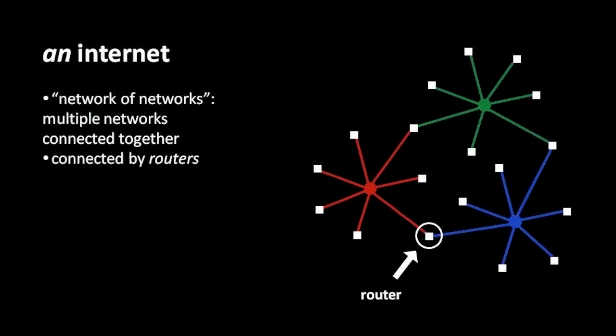When we take multiple independent networks and connect them together into one larger network, we call that an internet — not necessarily the internet, just an internet. An internet is effectively a network of networks, and the connection points between the networks are these special hosts called routers. A router is a computer which acts as a connection point between two networks, and the data from one network to the other is passed through those routers.